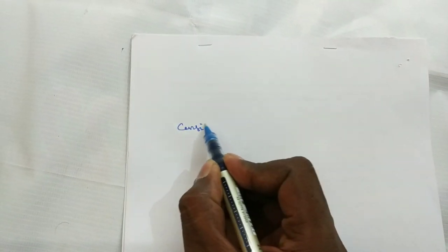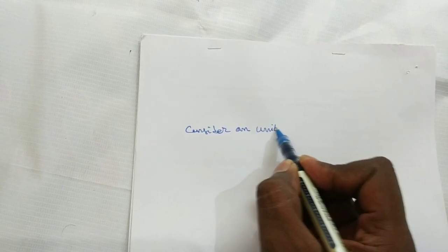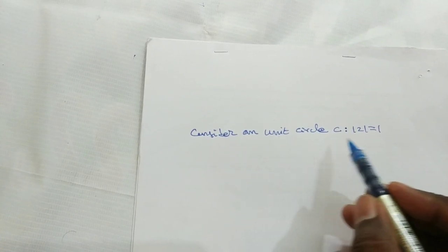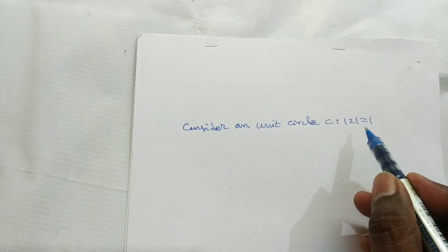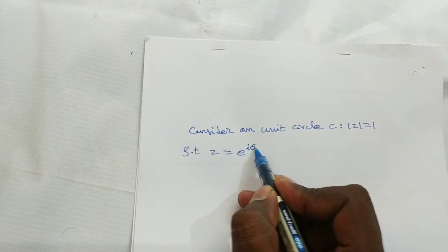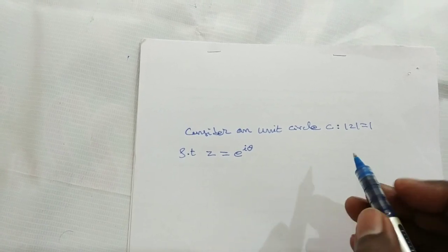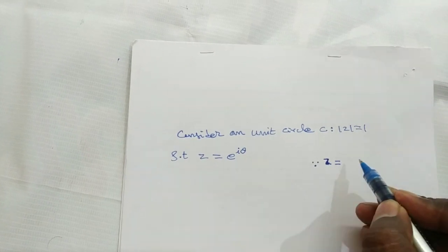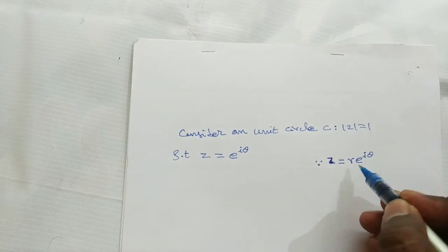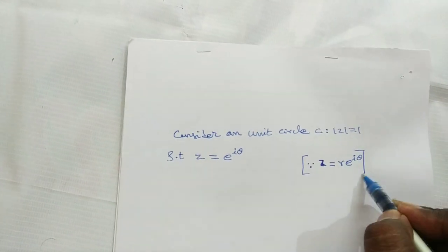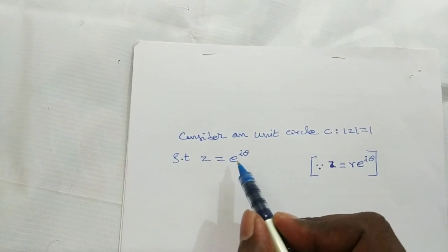In this type, consider a unit circle C where mod(z) = 1, meaning radius 1 and center (0,0), such that z = e^(iθ). The unit circle uses e^(iθ) because every complex number in polar form is r·e^(iθ) = r(cosθ + i·sinθ). Here the radius is 1, so z = e^(iθ).